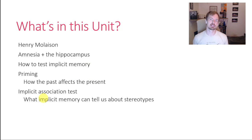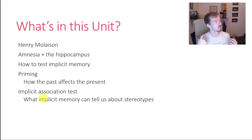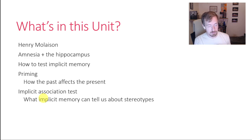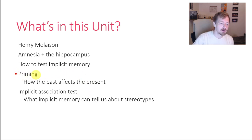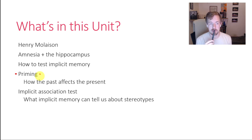What we're going to be talking about today is implicit memory, amnesia, and how we remember things without the use of language. We'll also be talking about a couple of other big ideas. Primarily, we'll be talking about priming, which is something you see in cognitive psychology, social psychology, and clinical research, and we'll talk about how it's related to implicit memory.